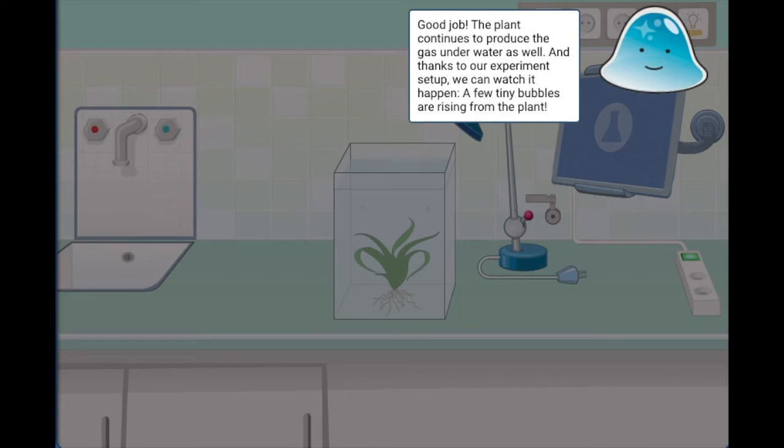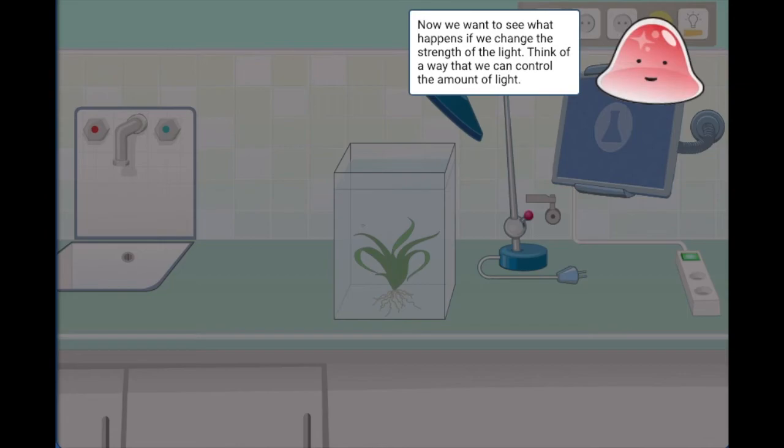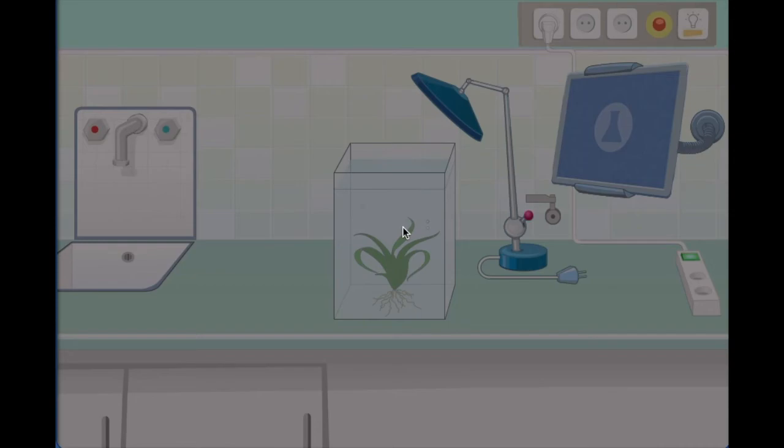A few tiny bubbles are rising from the plant. Now we want to see what happens if we change the strength of the light. Think of a way that we can control the amount of light. So here we can see bubbles. This is a long experiment in virtual lab. How do we experiment in virtual lab - this will be understood.